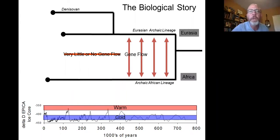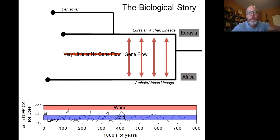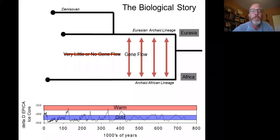Sometime between 400 and 300,000 years ago, a lineage breaks off. This was recently found from genetic work done on a finger bone from a cave in the Altai Mountains in Russia. We call that lineage the Denisovan lineage — ultimately a population of near-modern humans that lived in eastern Eurasia.